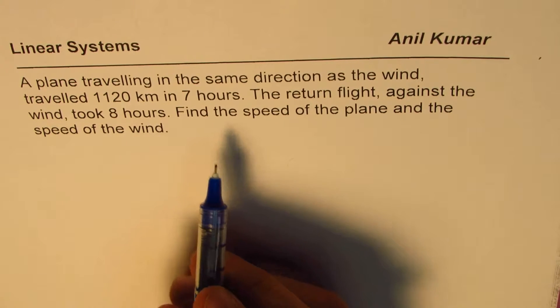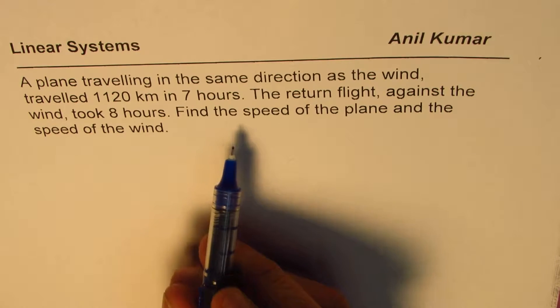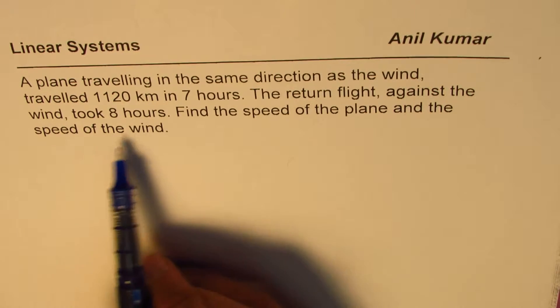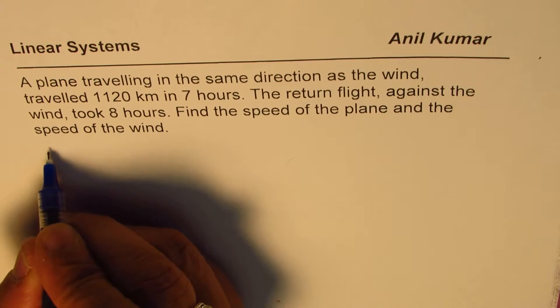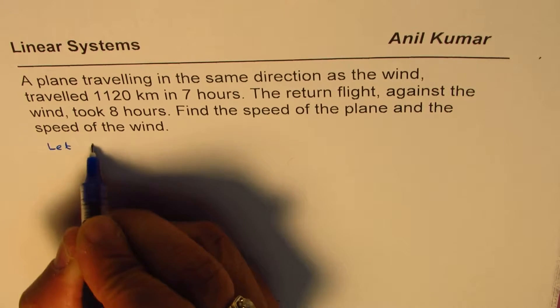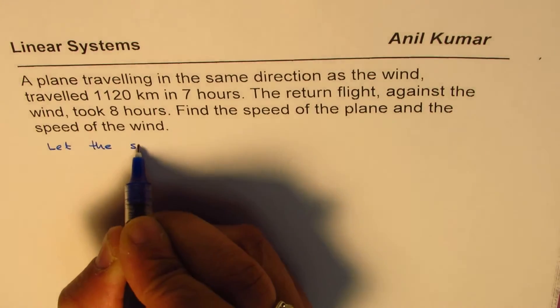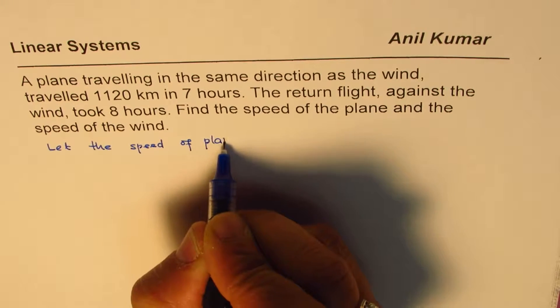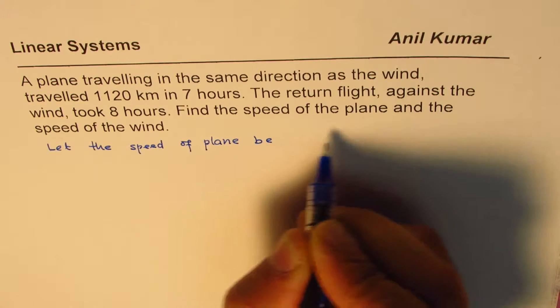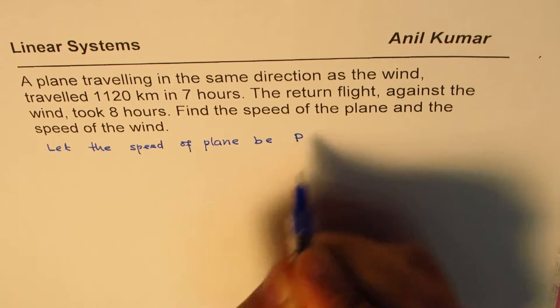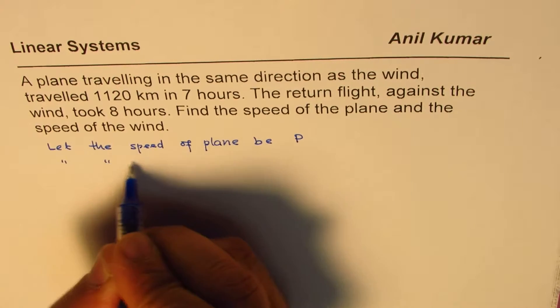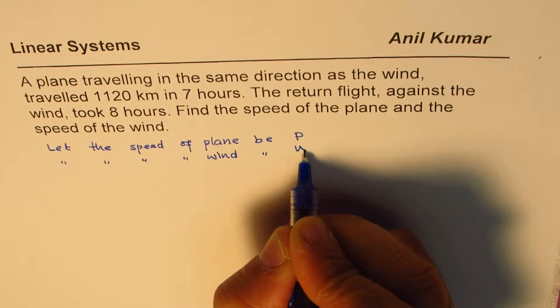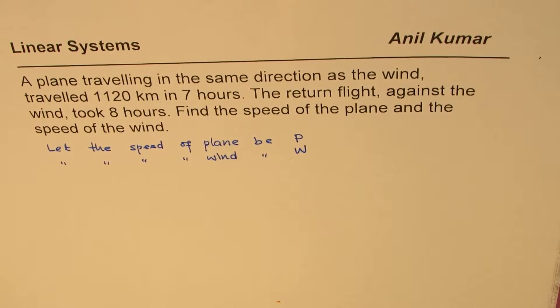Now whenever you are doing word problems, the first step should be define your variables. It says find the speed of plane and the wind. So that gives you a hint. We say let the speed of plane be P, and let the speed of wind be W. So these are our variables.